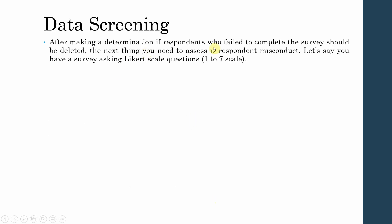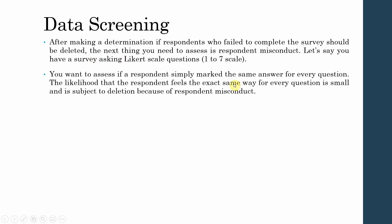After determining whether respondents who fail to complete the survey should be deleted, the next thing to assess is respondent misconduct. If you have asked the survey on a Likert scale from 1 to 7, you want to assess if the respondent simply marked the same answer for every question. The likelihood that a respondent feels the exact same way for every question is small, and such responses are subject to deletion. We do not normally have the same answer for each question, so there is bound to be variation in responses.